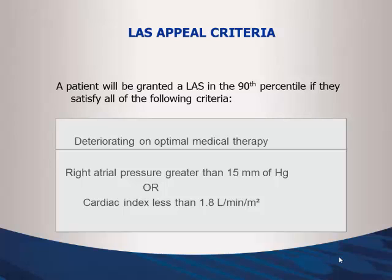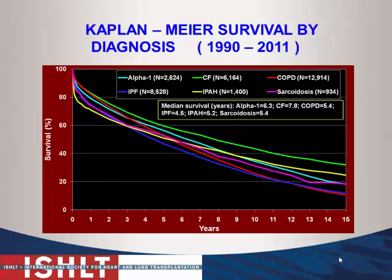There is an appeal criteria to jump a patient to the 90th percentile if they meet criteria: deterioration on optimal medical therapy, right atrial pressure greater than 15, or cardiac index less than 1.8. This applies to IPAH specifically. The LAS score is being revised to give better benefit to PAH cases.